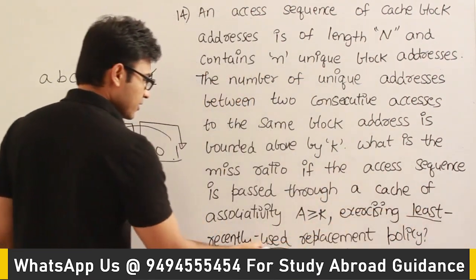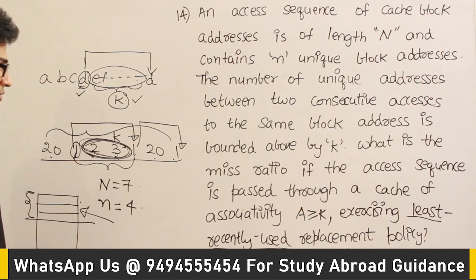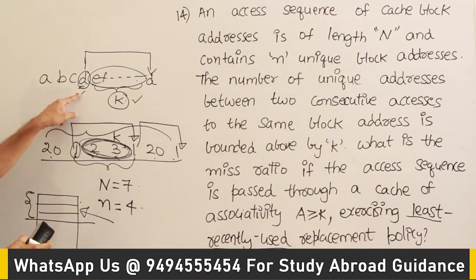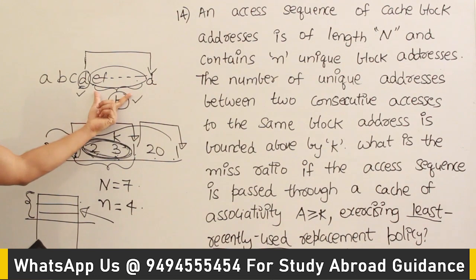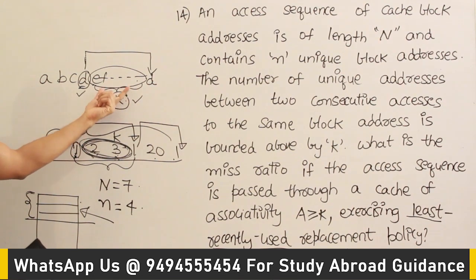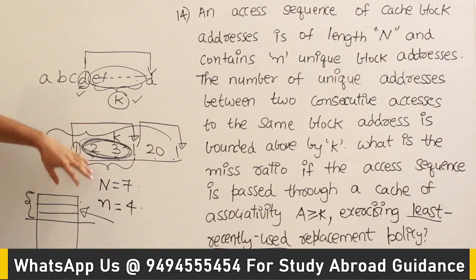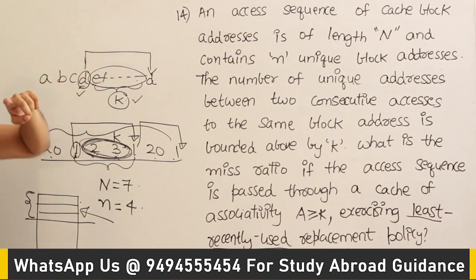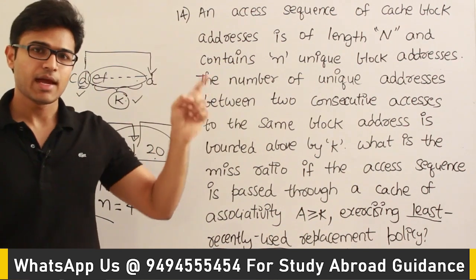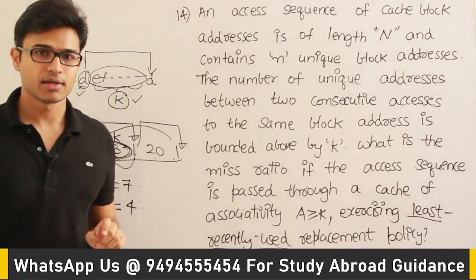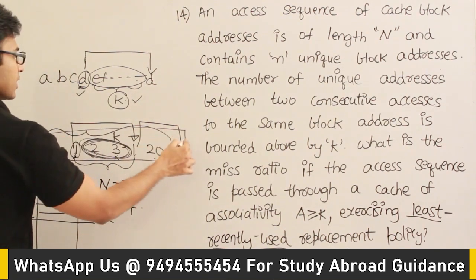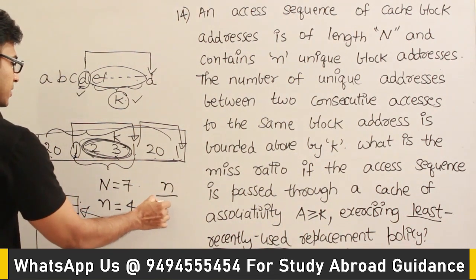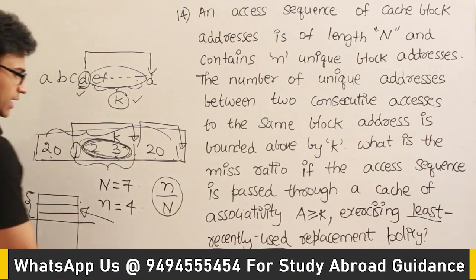LRU in set-associative mapping will be discussed separately, but the key point is: a block referred now will still be present when referred next time, because all intermediate blocks fit in the same set without evicting it. Out of capital N total references, there are small n unique blocks, so there will be n misses. The miss rate is n divided by N.